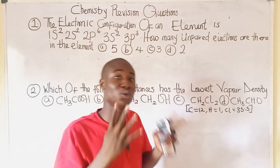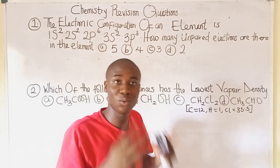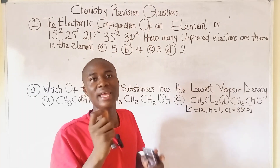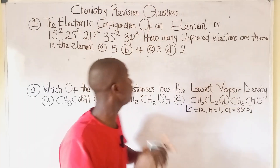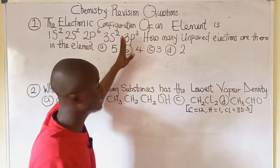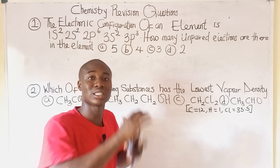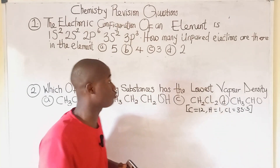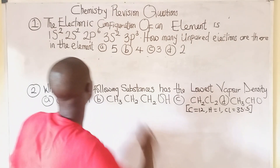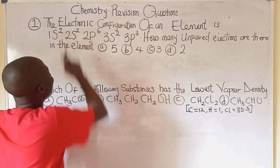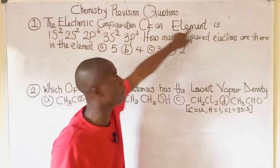Welcome to today's video lesson with Bright Edo. In today's lesson I'll be answering various chemistry questions that cut across different topics in chemistry. Here is the first question, which says the electronic configuration of an element is given.